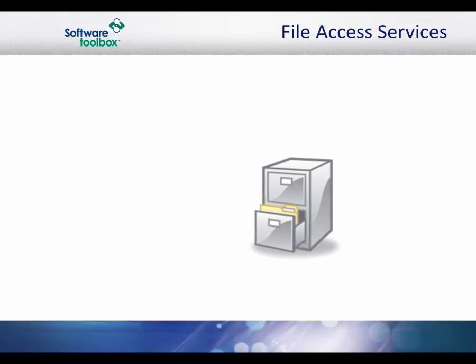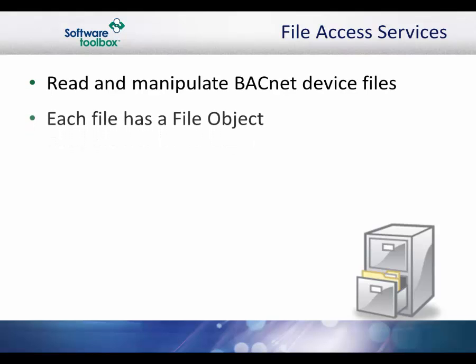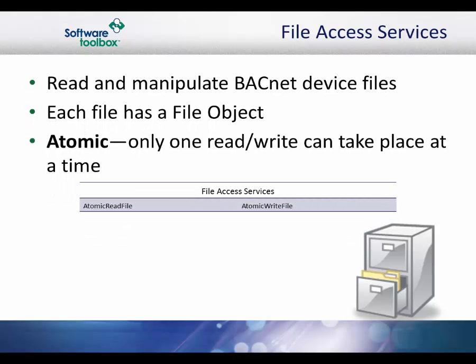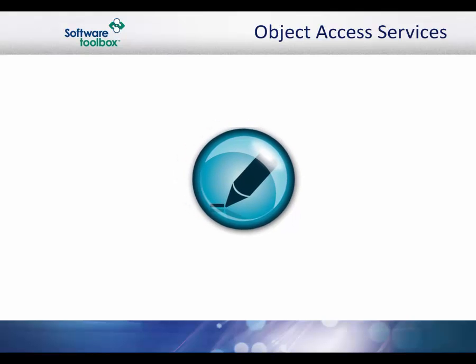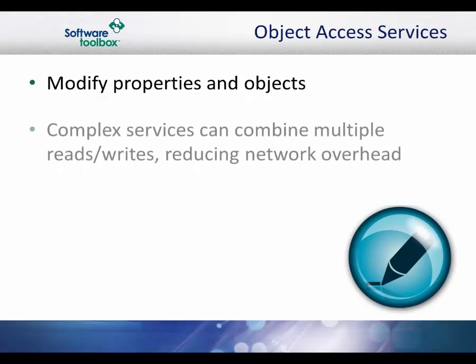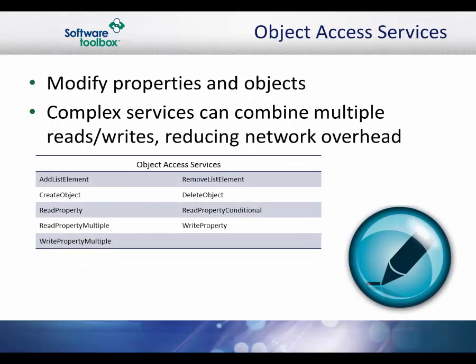File access services are used to read and manipulate files in a BACnet device. In BACnet, files represent grouped data bytes of arbitrary length and meaning — they do not necessarily relate to any kind of mass storage device. Every BACnet accessible file has a file object associated with it. The word atomic in the service name merely means that only one read or write operation can take place at a time. Object access services provide the means to read, modify, and write properties, and to add and delete objects. Multiple services are provided for reading and writing properties. The purpose of the more complex services is to combine as many reads or writes to properties of objects within a BACnet device into a single message, thus reducing network overhead.